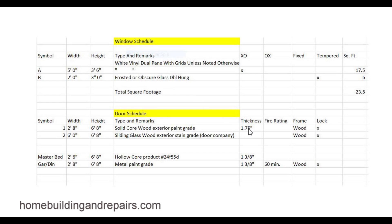You might find a decimal like 1.75 for inches, a fraction, or 60 minutes for a fire rating — a one-hour fire rating. This stuff is not all going to be the same. I did some research on window schedules and door schedules before I made this video and was shocked at how they varied from project to project and architect to architect.